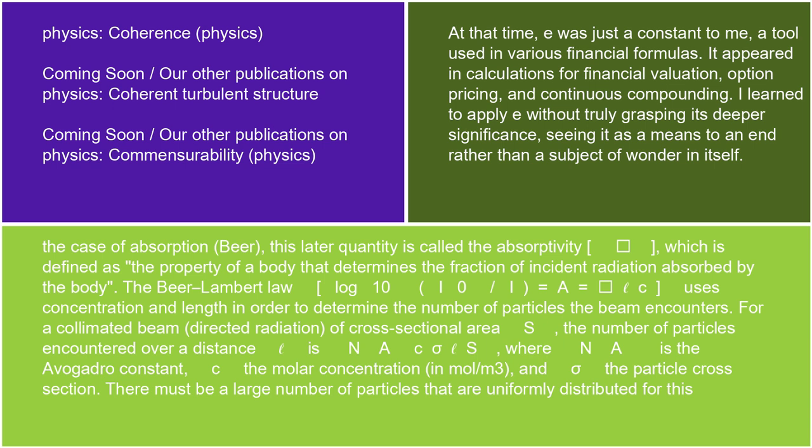In the case of absorption (Beer), this latter quantity is called the absorptivity ε, which is defined as the property of a body that determines the fraction of incident radiation absorbed by the body. The Beer-Lambert Law, log₁₀(I₀/I) = A = εCℓ, uses concentration and length in order to determine the number of particles the beam encounters.